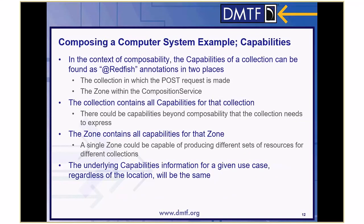The second step of the previous workflow requires the client to parse the capabilities information for a given zone. In the context of composability, the capabilities of a collection can be found as @redfish annotations in two places: the collection in which the POST request is made, and the zone within the composition service. The collection contains all capabilities for that collection, because there could be capabilities beyond composability that a collection needs to express. The resource zone contains all capabilities for that zone, because a single zone could be capable of producing different sets of resources for different collections. The underlying capabilities information for a given use case, regardless of the location, will be the same.